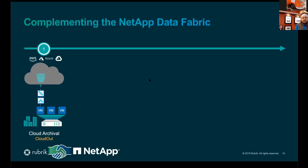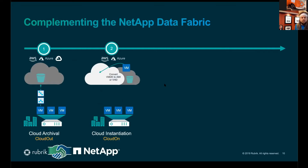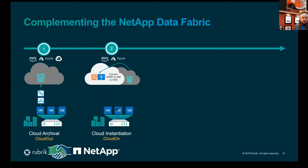Looking at how Rubrik complements the NetApp data fabric for workloads in the cloud — we can archive to the cloud, and we have the cloud-on capability where we convert vSphere and Hyper-V VMs to Azure and AWS for the varying concerns you might have there.